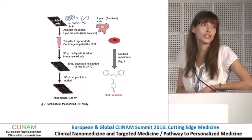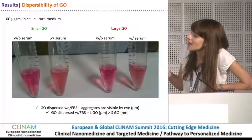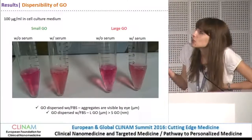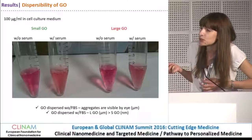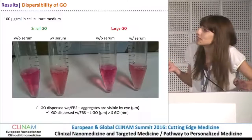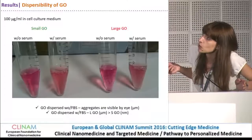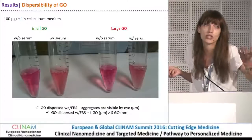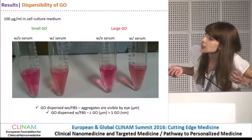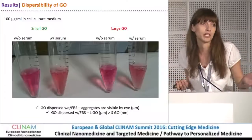In the cell culture medium, the size distribution is actually much more variable. We didn't really measure the size distribution in the cell culture medium, but already from the images we see that only in the case of small graphene oxide in the presence of serum does it look homogeneous. In all other conditions, especially without serum, we see clumps of the material indicating the actual size is much bigger.